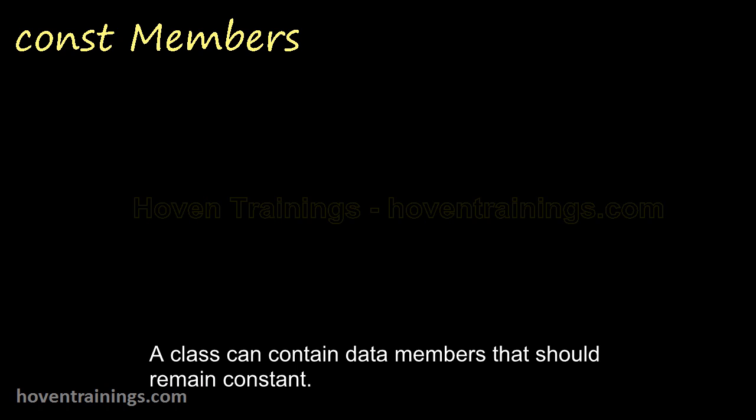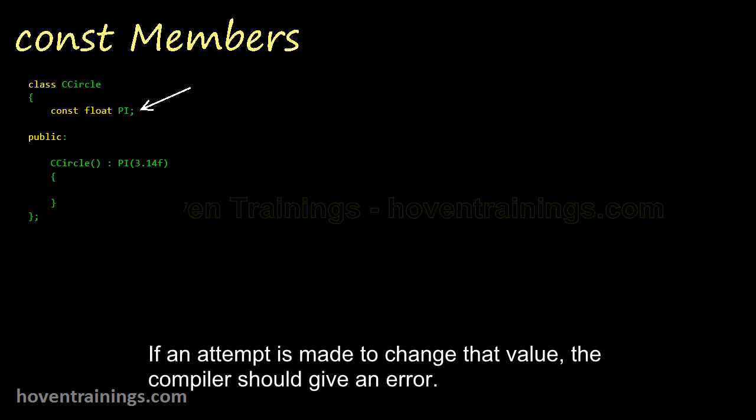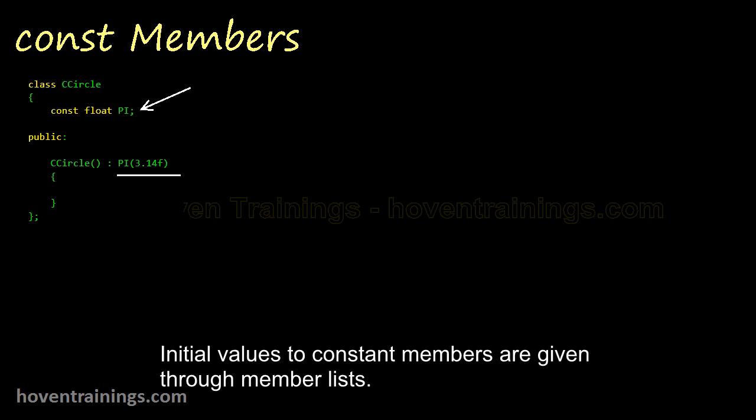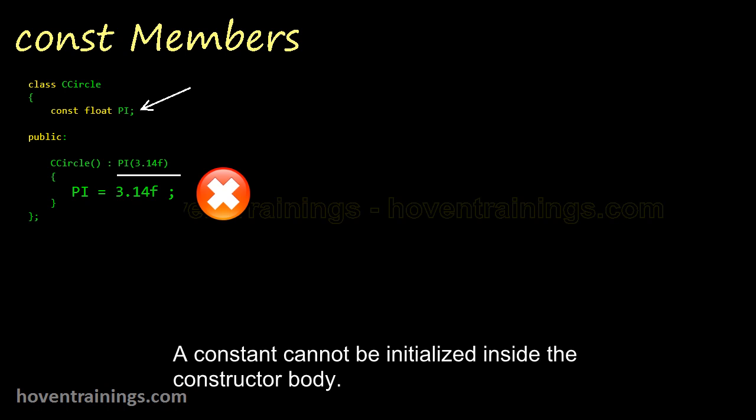A class can contain data members that should remain constant. One example is the mathematical constant called π. This is a class that contains a constant member. The value of this member should not be changeable. After the first initialization, the value should remain fixed. If an attempt is made to change that value, the compiler should give an error. Initial values to constant members are given through member lists. Such values are given before the object is constructed. A constant cannot be initialized inside the constructor body.